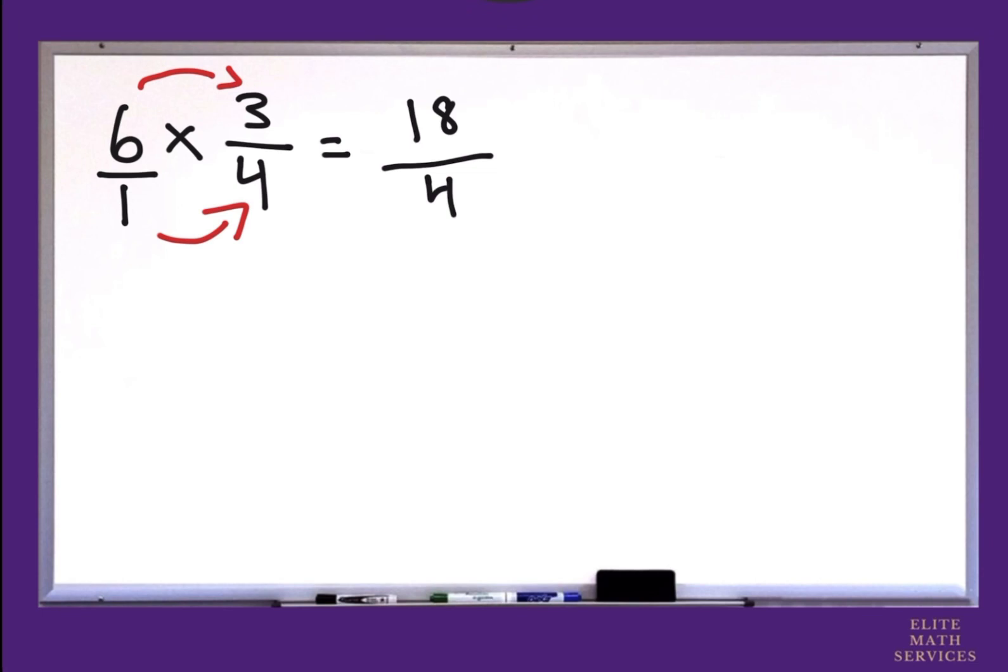However, we are left with an improper fraction so we must simplify it and change it into a mixed number. Now remember the rule when changing improper fractions to a mixed number is that we keep our denominators the same, which is 4.